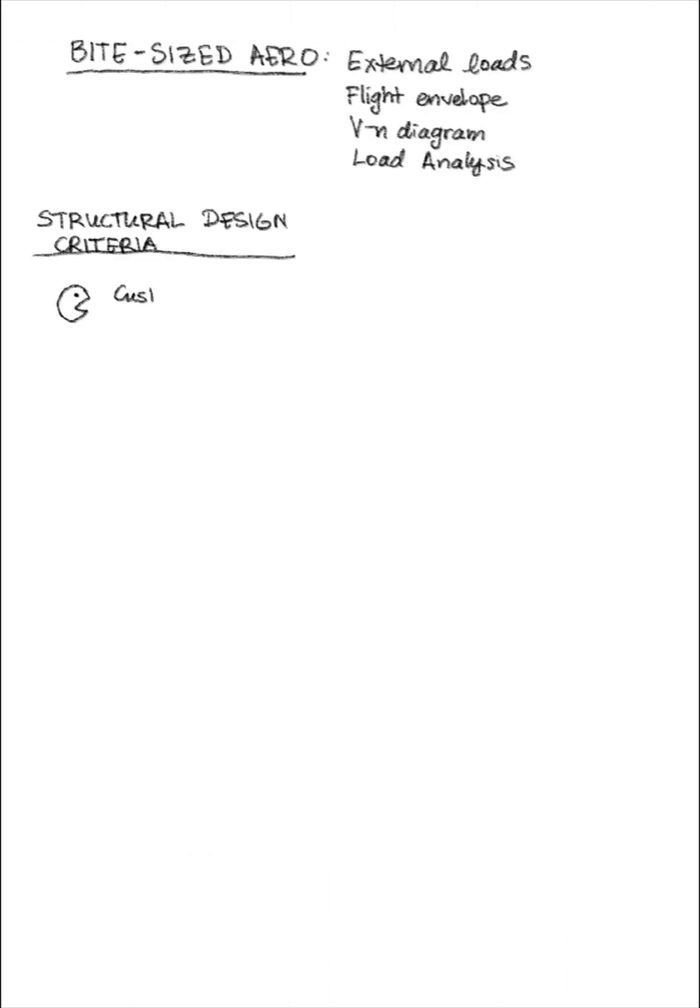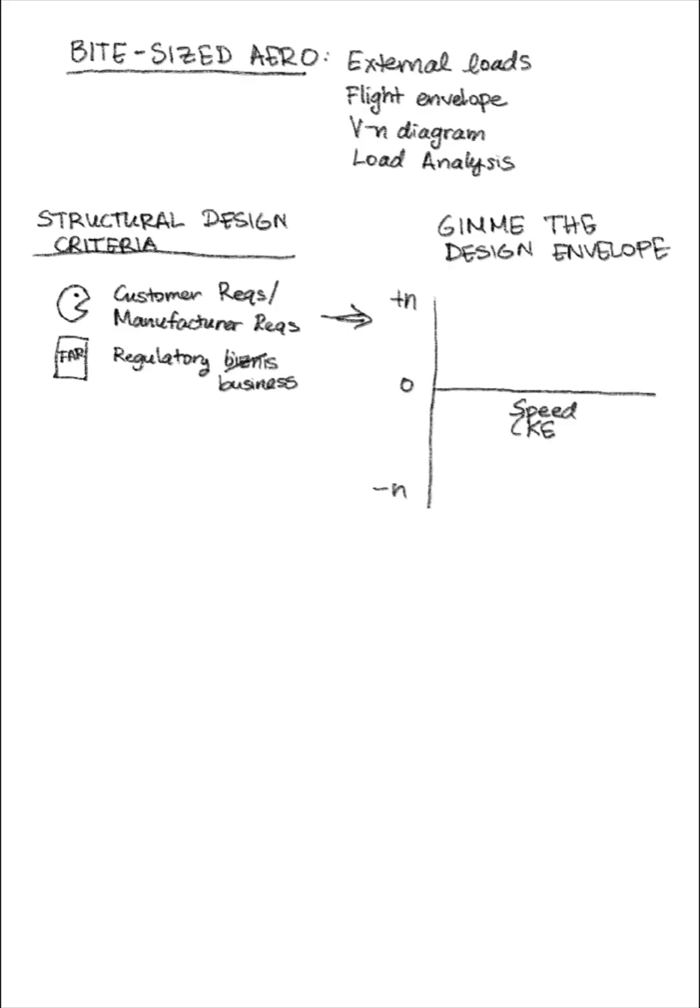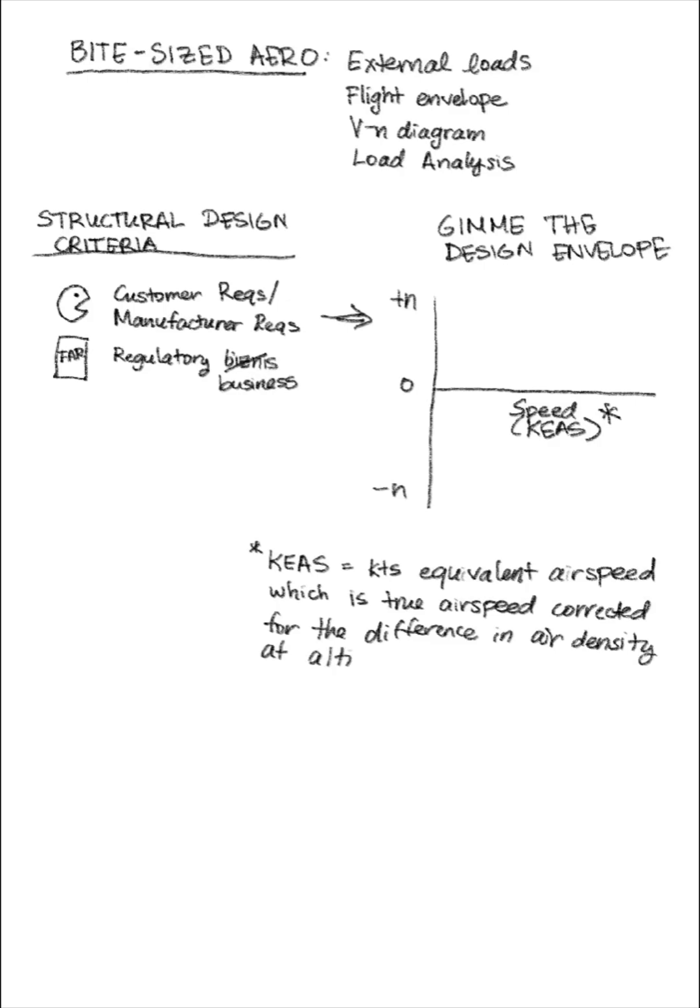Let's say you're a loads engineer just trying to make a living. You've got your structural design criteria and need to develop a set of aerodynamic and inertial loads based on the flight envelope. You're going to do this in equivalent airspeed because it represents a speed with constant dynamic pressure regardless of the aircraft's altitude, and it's basically the true airspeed corrected for the difference in air density at altitude compared with sea level.